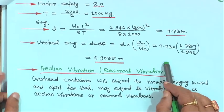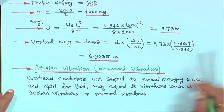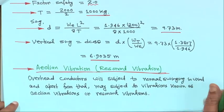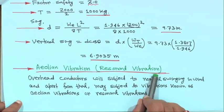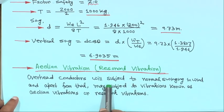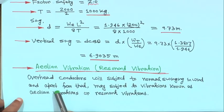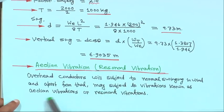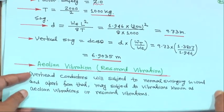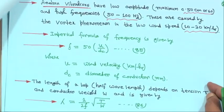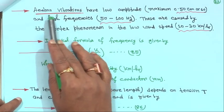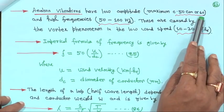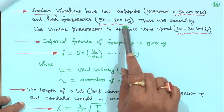With these 9 examples on sag and tension covered, before closing this chapter, a little bit on aeolian vibration or resonant vibration of the conductor. Generally overhead conductors are subject to normal swinging in wind, and apart from that may be subject to vibrations known as aeolian vibrations or resonant vibrations. These have very low amplitude — maximum maybe 0.5 centimeter — and at high frequency in between 50 to 100 hertz.